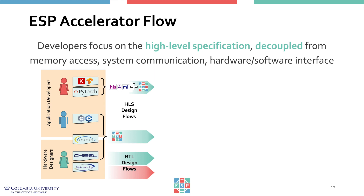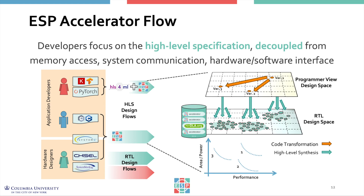From the accelerator skeleton, developers can explore the space of alternative design implementations by combining high-level code transformations and high-level synthesis knob settings. This design space exploration produces a rich library of alternative Pareto-optimal implementations, each offering a different cost-performance trade-off point, and each can be chosen and seamlessly integrated into an ESP system.